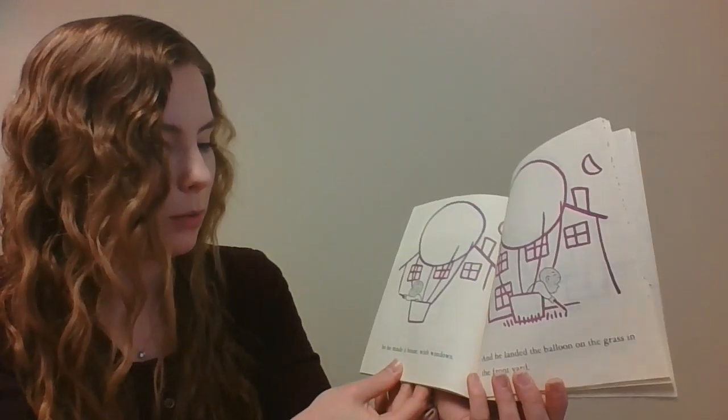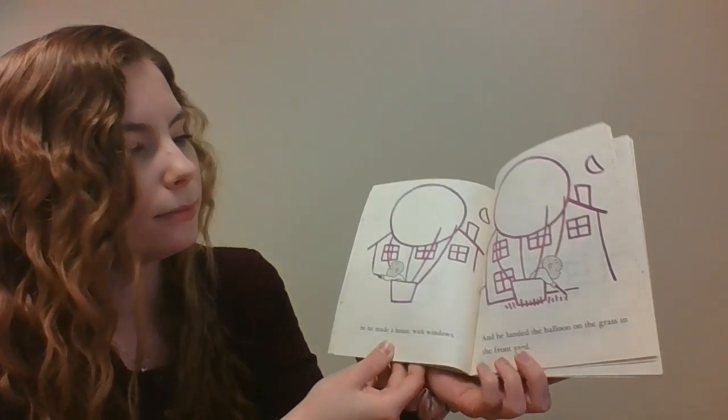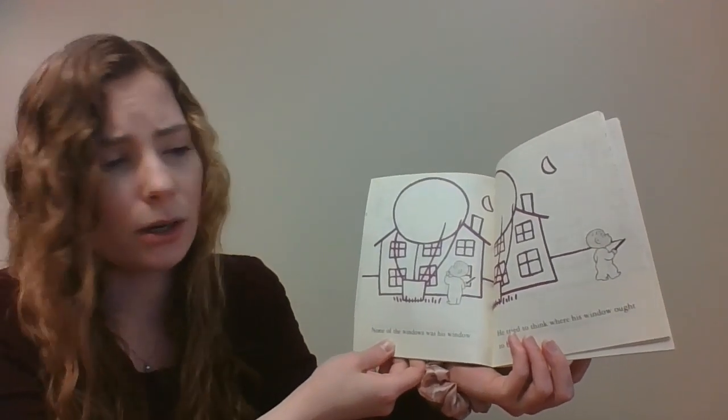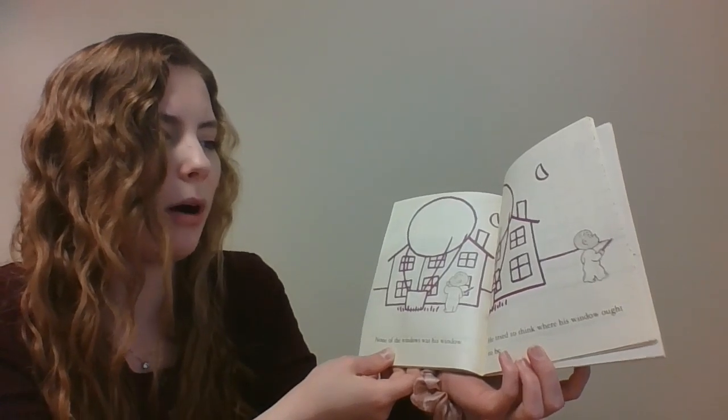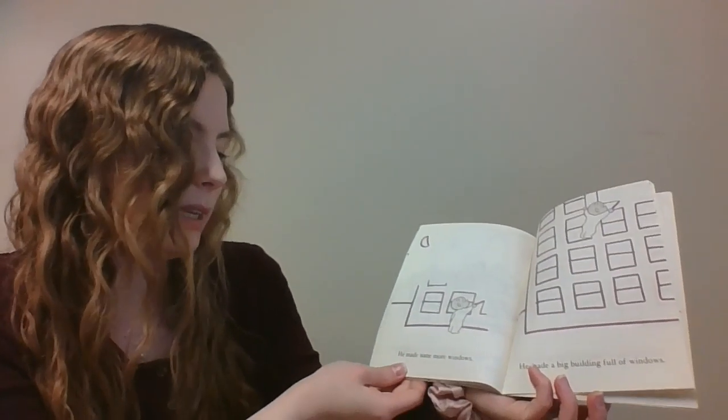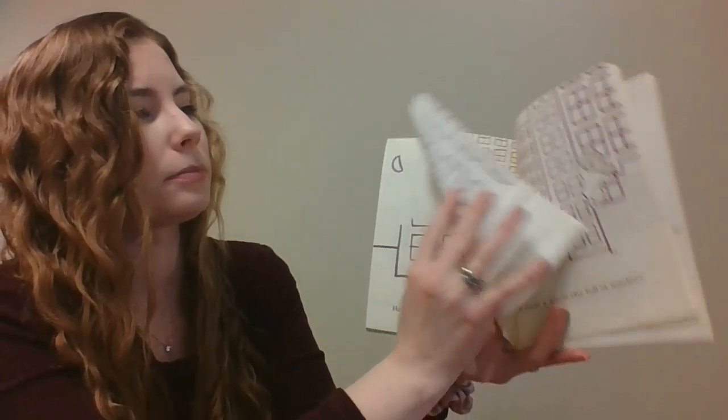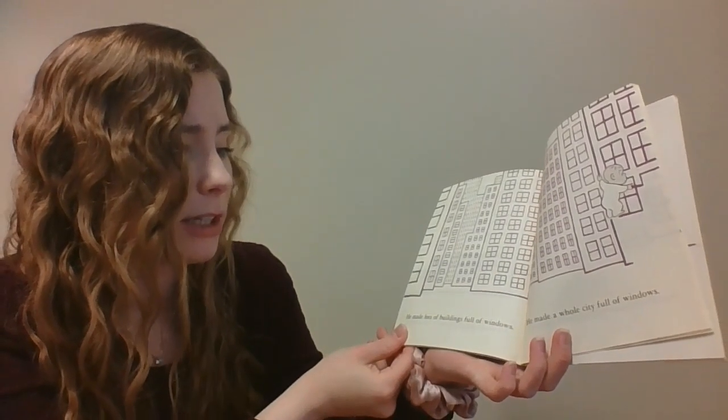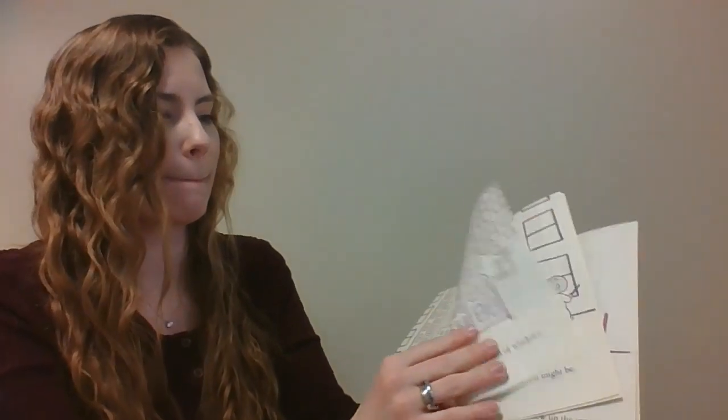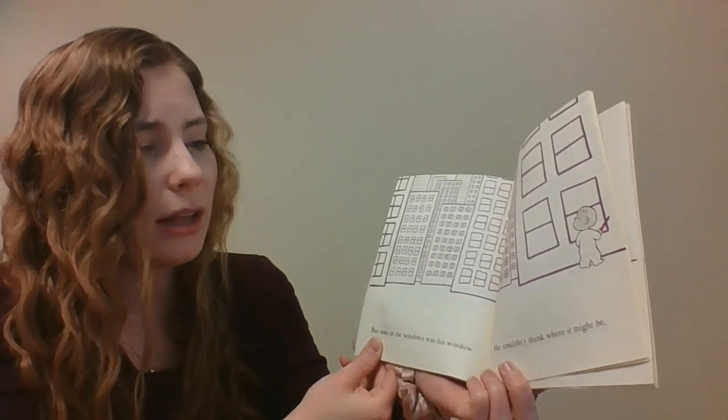So, he made a house with windows, and he landed the balloon on the grass in the front yard. None of the windows was his window. He tried to think where his window ought to be. He made some more windows. He made a big building full of windows. He made lots of buildings full of windows. He made a whole city full of windows. But none of the windows was his window. He couldn't think where it might be.